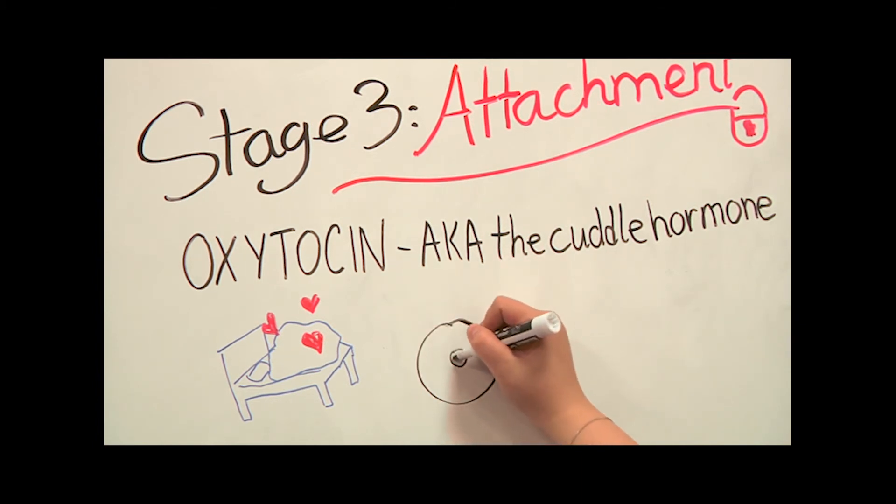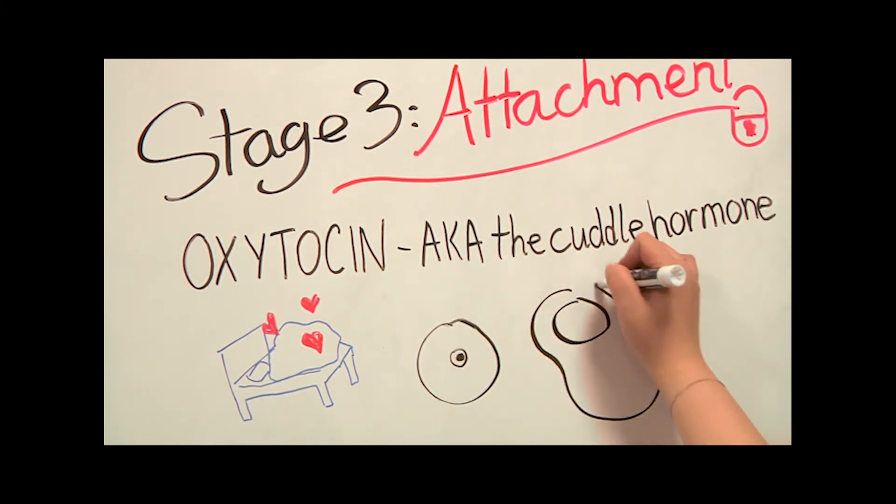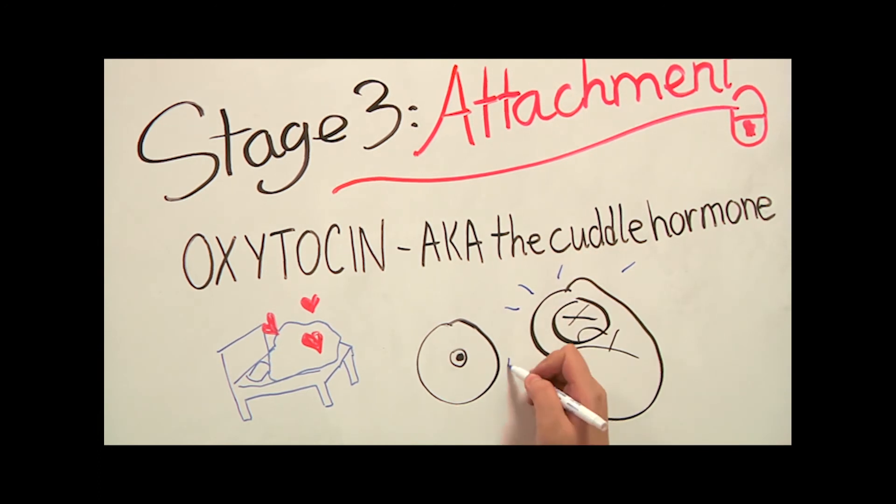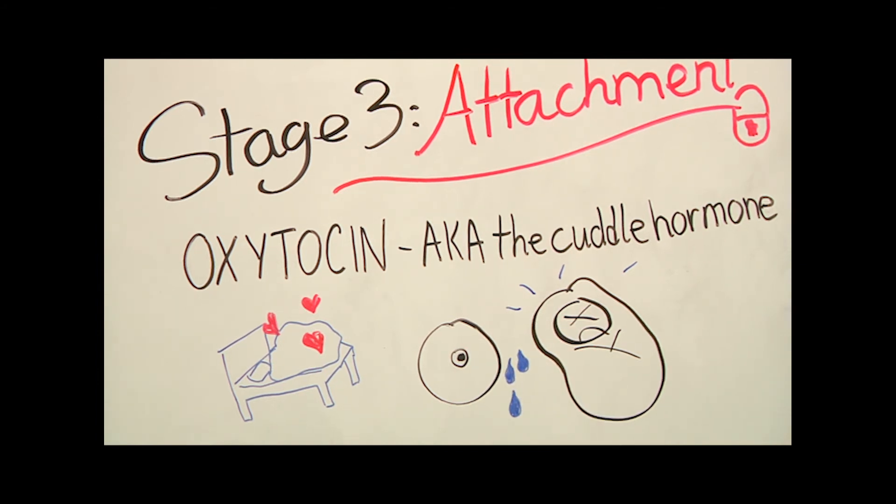Oxytocin also seems to help cement the strong bond between mom and baby and is released during childbirth. It is also responsible for a mom's breast automatically releasing milk at the mere sight or sound of her young baby.